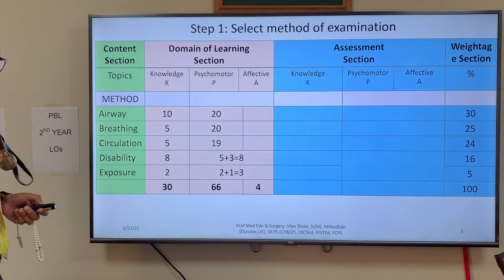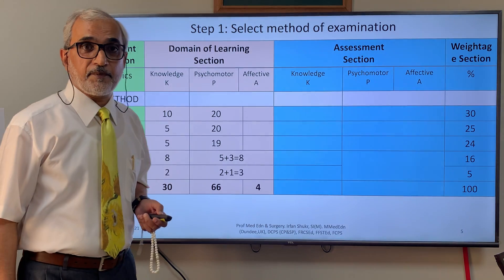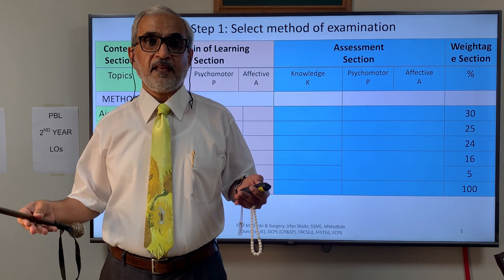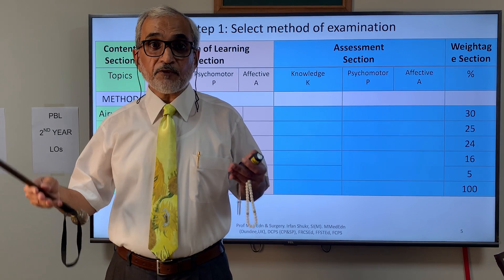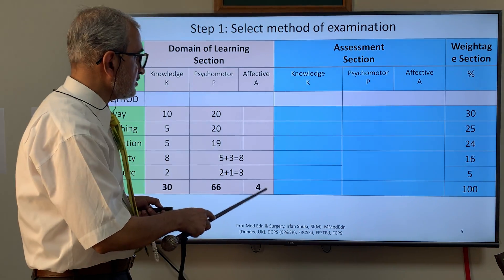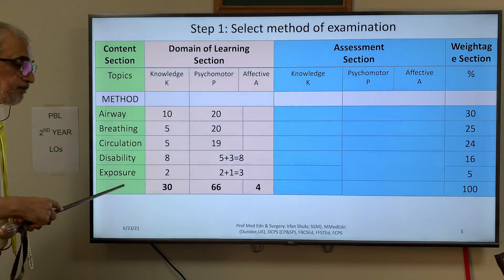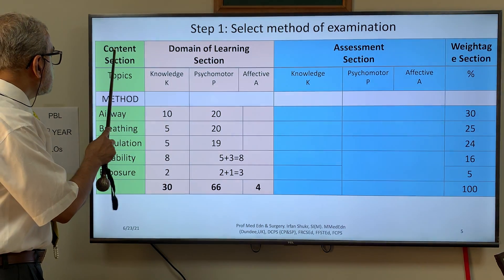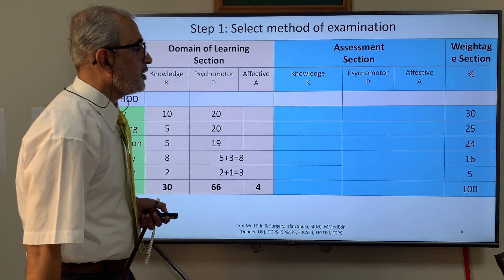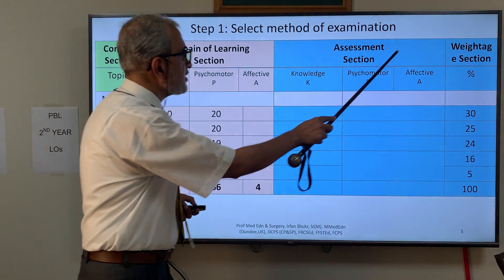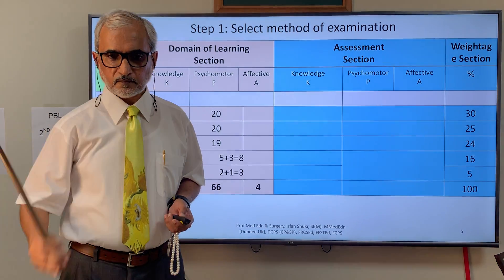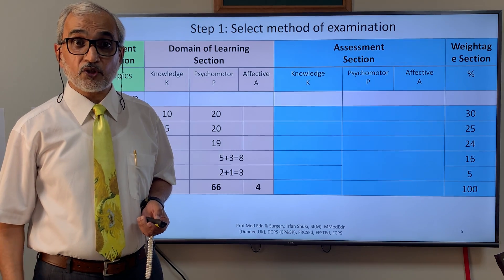The first thing you have to do is select the method of examination. For clarity and easy understanding, an effective way is to add one more section — the assessment section. In the previous TOS, certain columns were already present, and we have now added this assessment section.